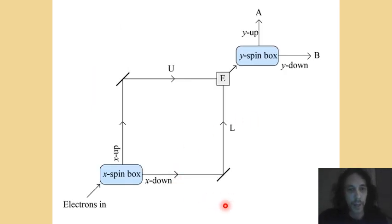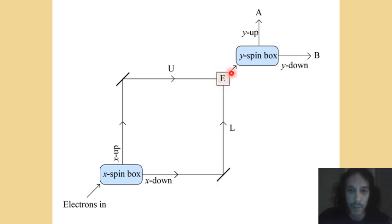Now consider another device. There's an x-spin box at the bottom, and electrons enter it — half go out x-spin up, bounce off a mirror on the upper path, and get reflected to point E. The x-spin down electrons go on the lower path, bounce off a mirror, and wind up at the same point E. All of the electrons from point E then get fed into a y-spin box. You fed y-spin up electrons into the x-spin box; when they go in they should be completely randomized in terms of y-spin, so half should come out y-spin up and half y-spin down.